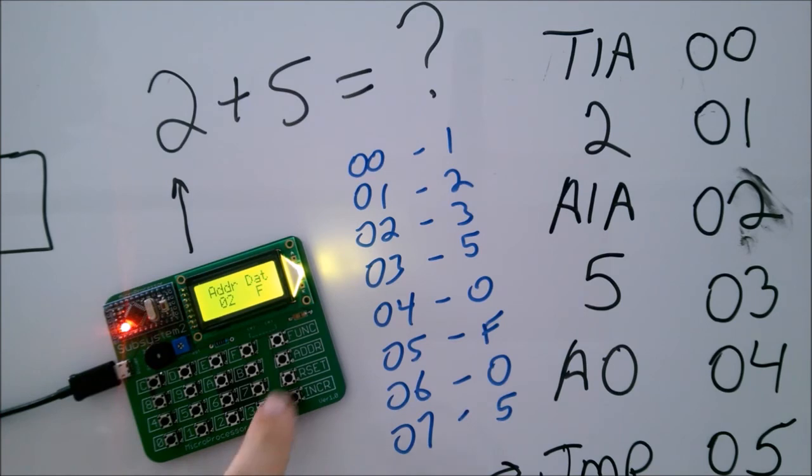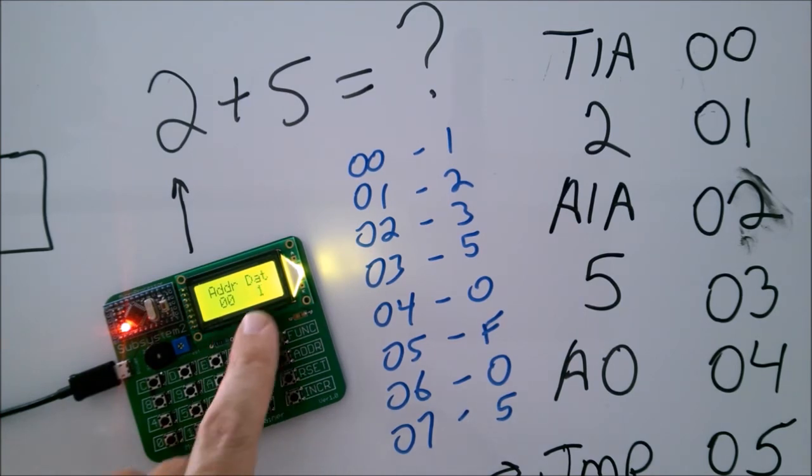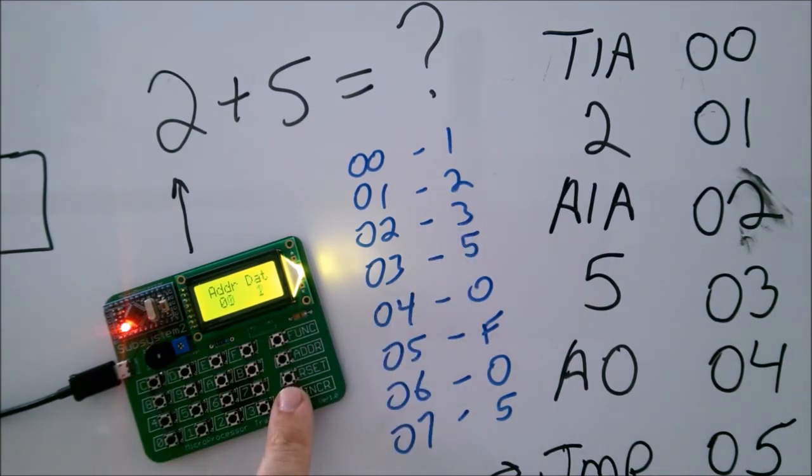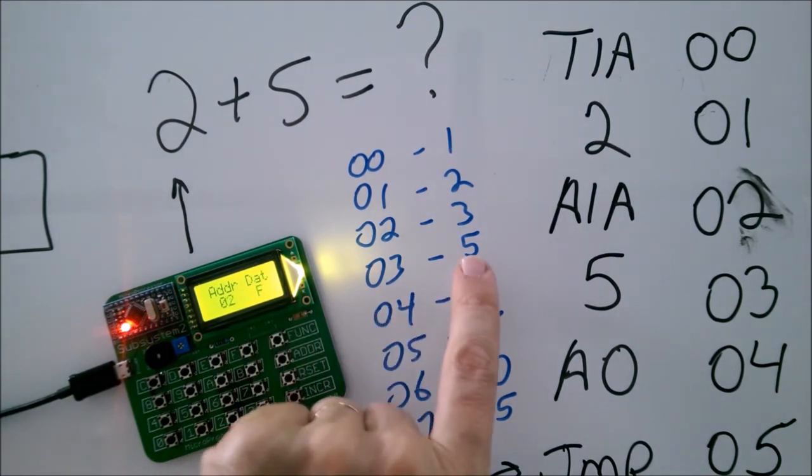And I can show you, if we reset, you'll see at zero, zero, I still have the one. And if I increment, I've still got the two. So that's great. So now we'll put in the rest of the program.